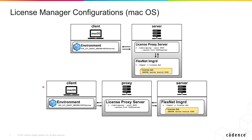The next configuration available has your Mac client machine, and then you can have two more machines: one that contains the License Proxy Server — which has to be a Linux machine — and a separate machine that runs the Cadence License Manager. That separate machine can be either a Windows or a Linux machine.